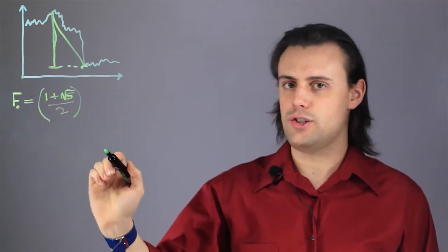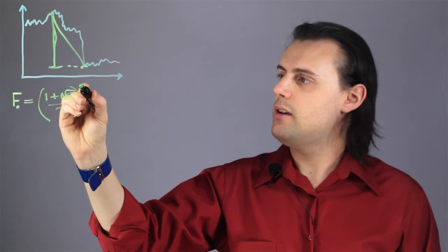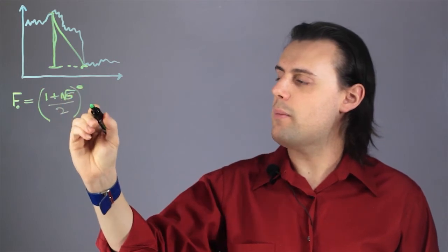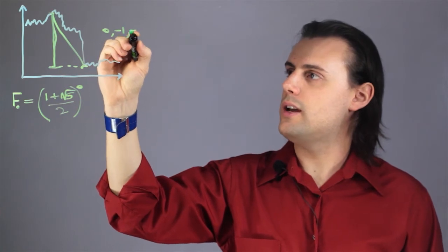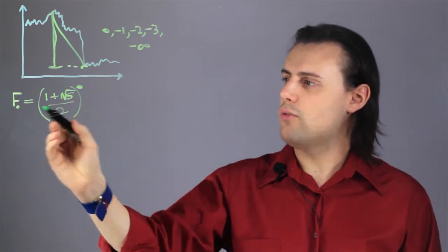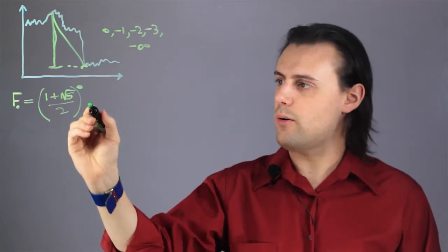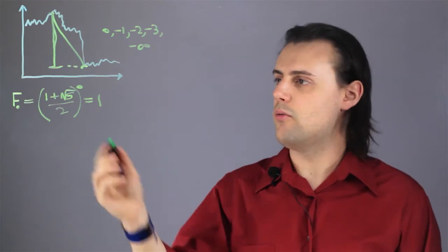The key Fibonacci ratios are going to be the golden ratio raised to the 0 power, the negative 1 power, the negative 2 power, negative 3, and negative infinity. When we raise the golden ratio to the power 0, of course, we just get 1. So that's going to be 100%.